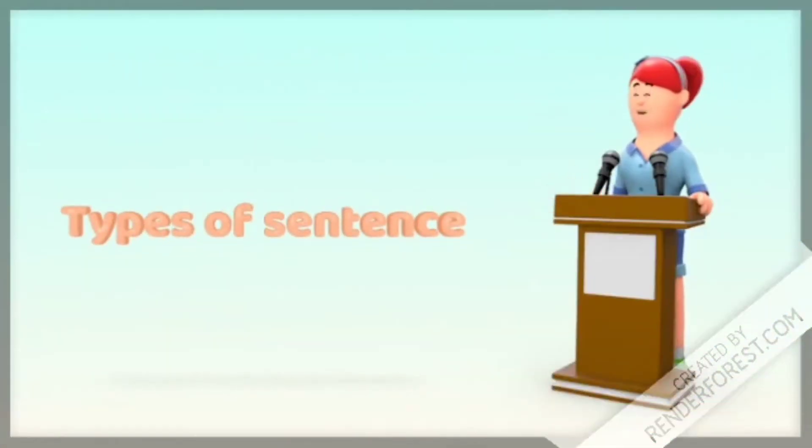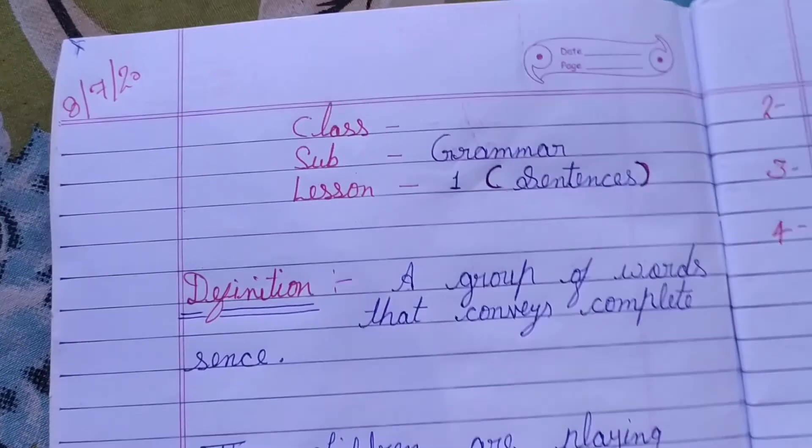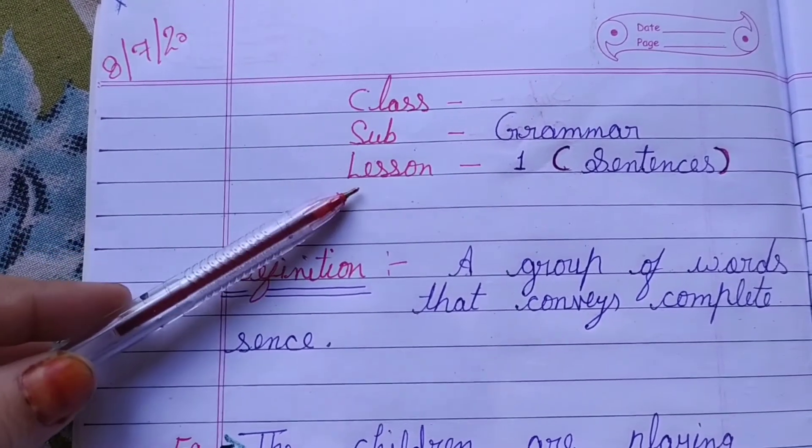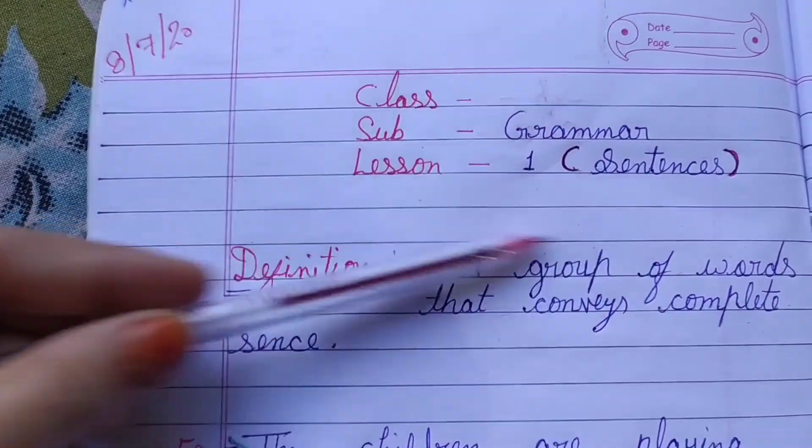So, types of sentence. How many types of sentence? There are four types of sentence. Note down in your notebook like this: date, class, subject and lesson.